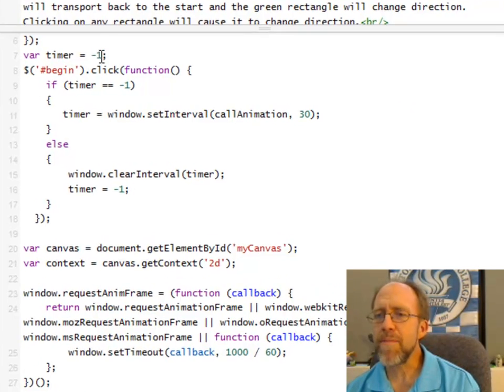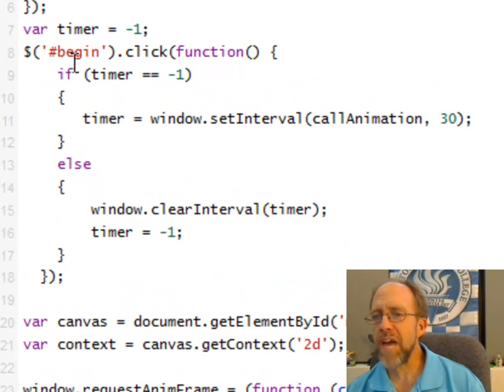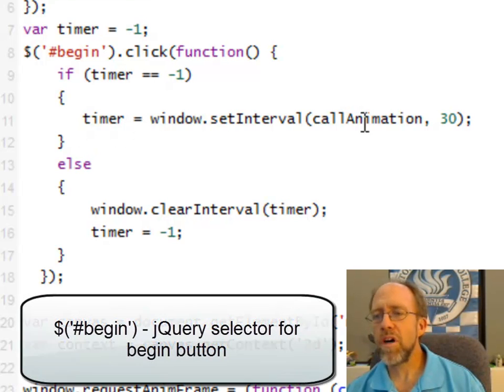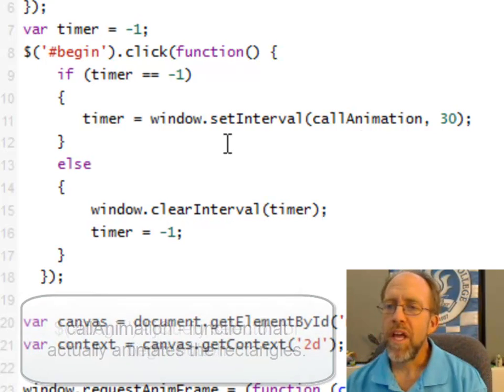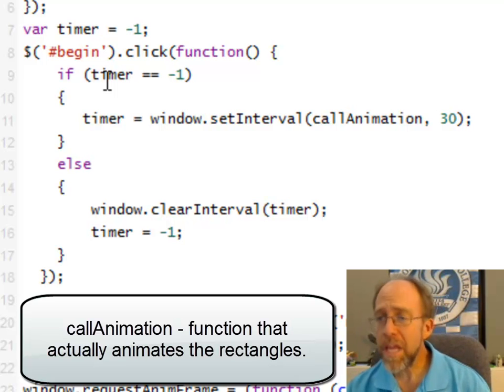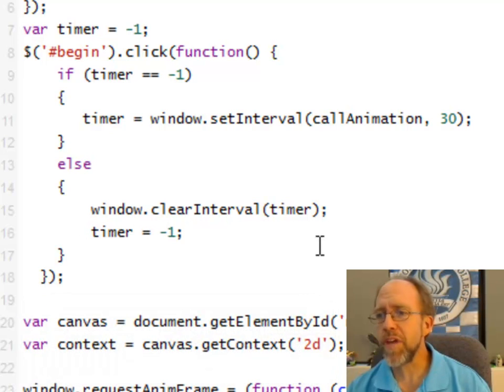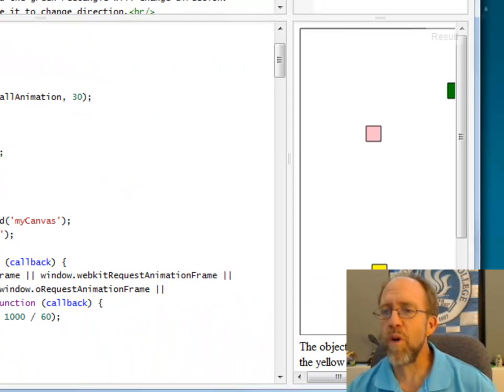I declare a variable called timer that I set to equal to negative one, and I have a begin button, and if the timer is negative one, it sets the interval, which calls the animation function, which you should know if you've been looking at the other videos, actually causes the animation to go. And if the timer is not equal to negative one, meaning that the timer is actually clicking through time, it's going to clear the interval and then set the timer back to negative one,